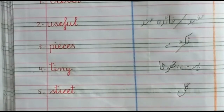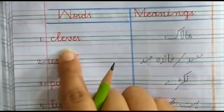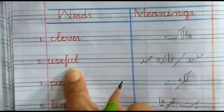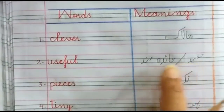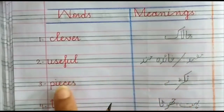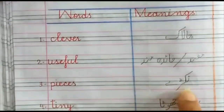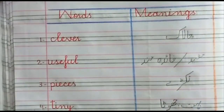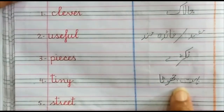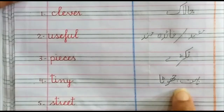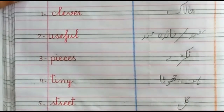Now read with me again class. Clever means chalaak. Useful means mufid ya fayda mand. Pieces mean tukde. Tiny means bohut chota. Street means gali.